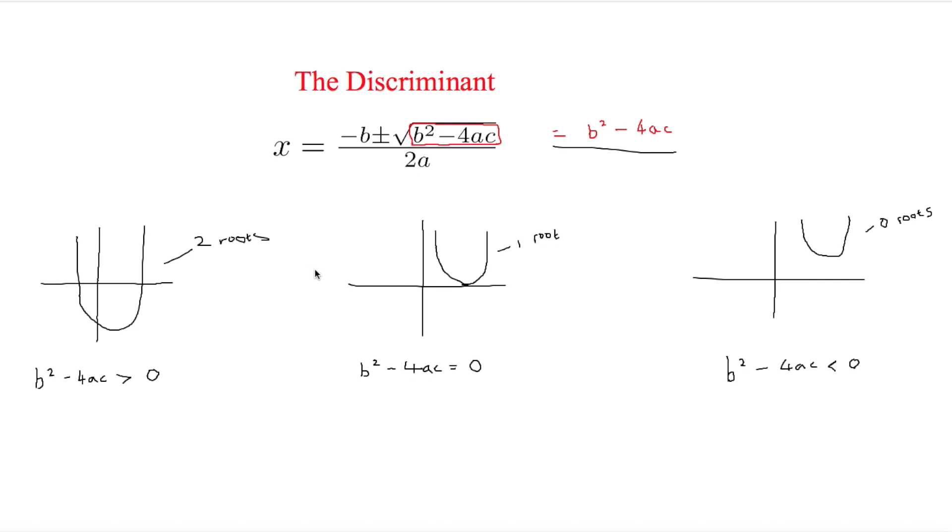This is I'm Stark and in this video we are looking at the discriminant. I've put the quadratic formula up here because the discriminant comes from the quadratic formula, and it's the bit underneath the root: b squared minus 4ac.